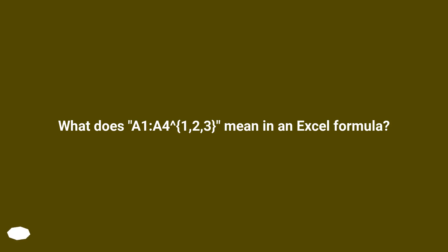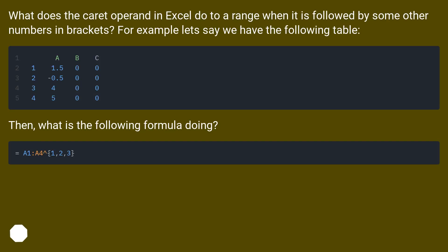What does A1:A4{1,2,3} mean in an Excel formula? What does the caret operand in Excel do to a range when it is followed by some other numbers in brackets?